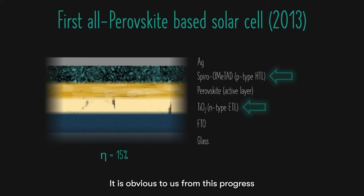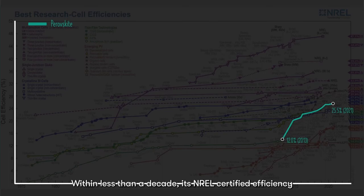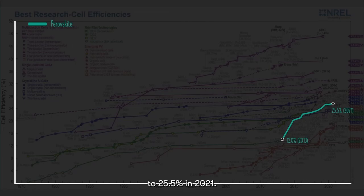It is obvious to us from this progress that perovskites are indeed a high-prospect material for solar cells. Within less than a decade, its NREL-certified efficiency managed to increase from 12% in 2013 to 25.5% in 2021.